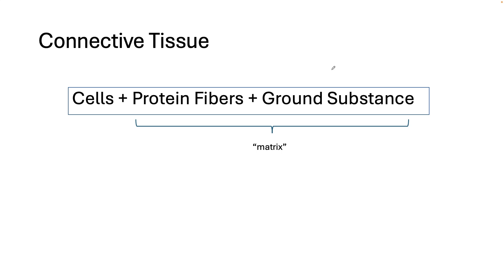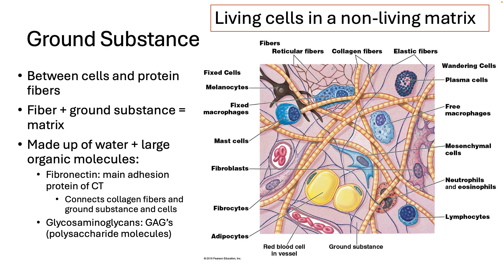The third component of connective tissue is ground substance, which makes up the bulk of connective tissue. Its characteristics range widely — it can be calcified and very solid, as in bone, all the way to totally fluid, as in blood and lymph. Ground substance is made up of water and large organic molecules. It contains fibronectin, which is the main adhesion protein of connective tissue, and glycosaminoglycans, or GAGs, which are large polysaccharide molecules.